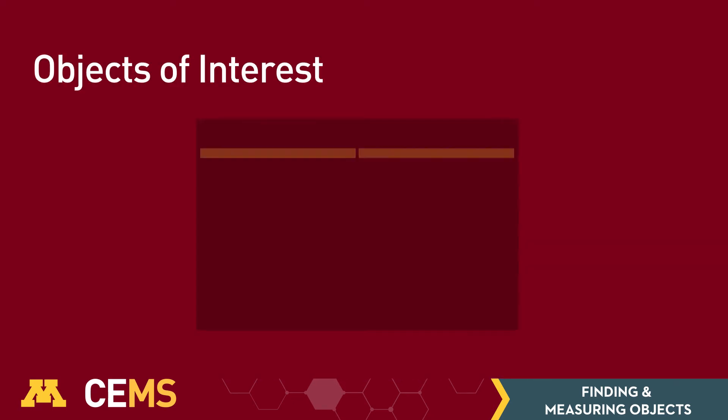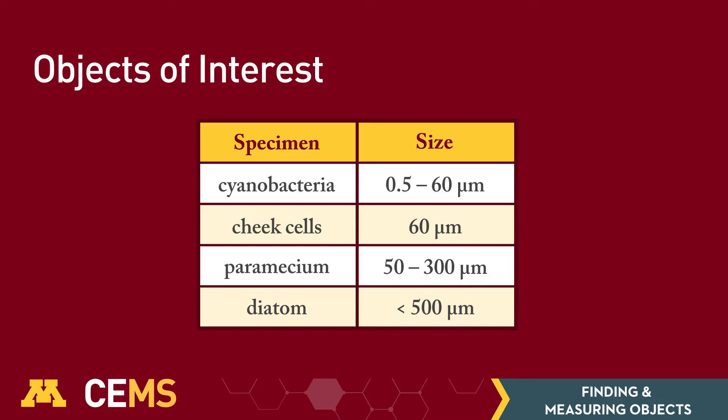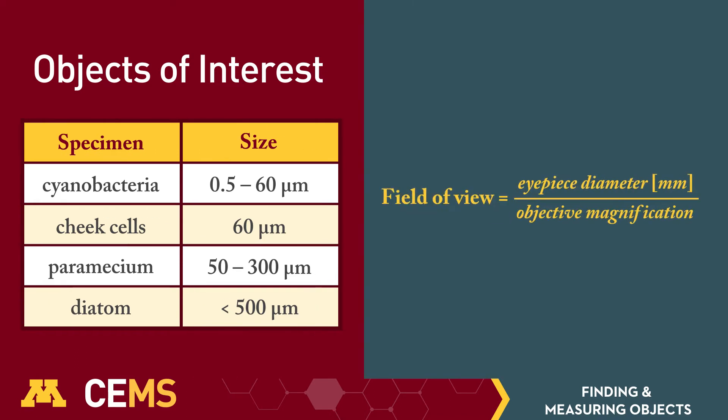Now let's discuss how to find your object of interest. This table shows the average size of some common objects you may observe under the microscope. Depending on the microscope's field of view, you should have a sense of how big your object of interest is going to look. The field of view is related to the magnification by the following equation.